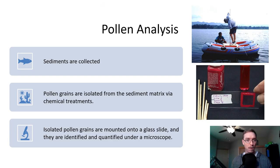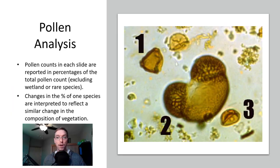For pollen analysis, sediment is collected in these cores that you see here, this floating tube or raft. Pollen grains are isolated from the sediment matrix via chemical treatments and then isolated pollen grains are mounted onto a glass slide and are identified and quantified under a microscope. Here's an example of what one of those slides look like. We're looking at three different types of pollen here.